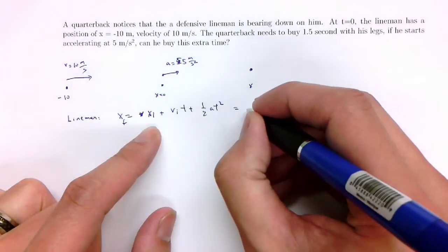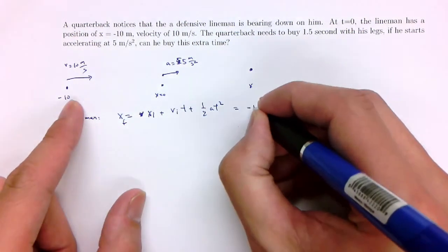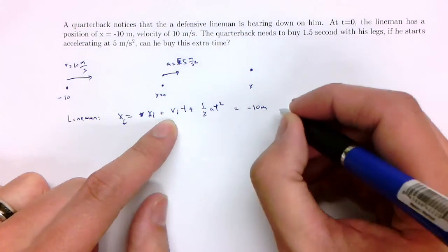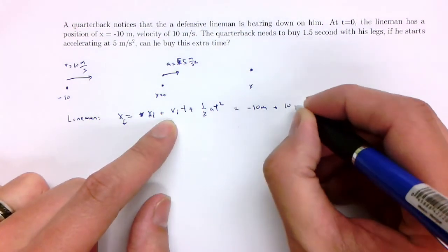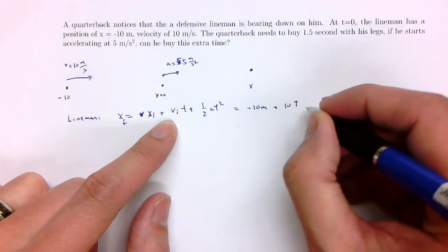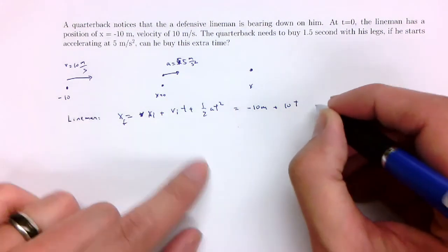x initial, well that's just going to be minus 10 meters. The initial velocity is going to be plus 10 meters per second. So that's 10 meters per second times t, and acceleration is 0. So that's it.